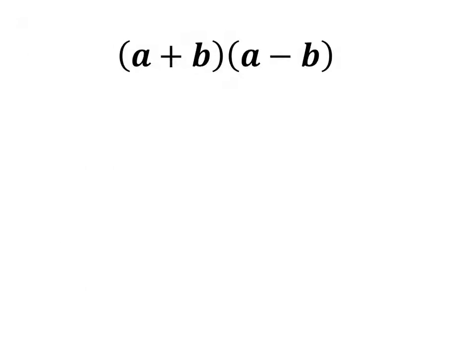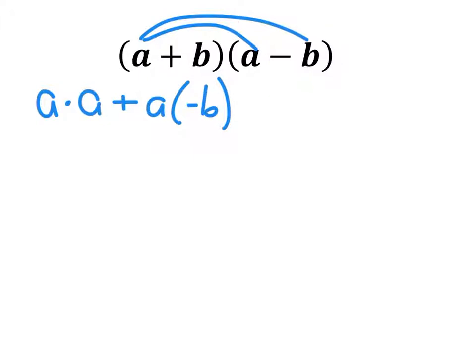So let's focus first on a plus b times a minus b. Let's distribute the first a into the other set of parentheses. And yes, I have made that a negative b — that's because we can make that a plus a negative b, which isn't a problem either way.